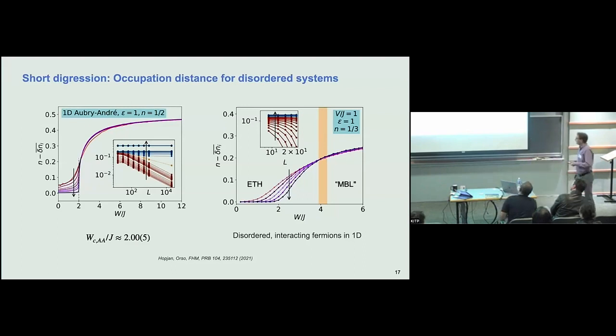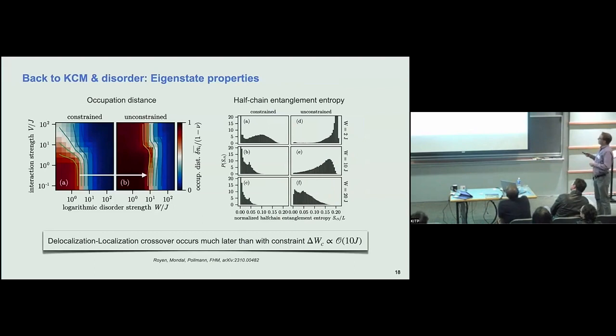So now we go back to this kinetically constrained one with disorder and we calculated this occupation distance. Here's a function of interaction strength and logarithmic disorder again. This is with constraint. This is unconstrained, essentially sampling over eigenstates from the center of the spectrum. And then you can see if you follow the green line between constraint and unconstrained model that is the same order of 10 difference in the crossover scale going from delocalization to localization. So clearly the constraint model in this case favors localization.